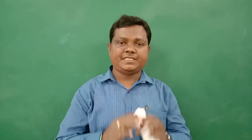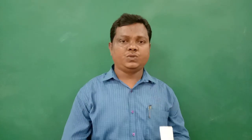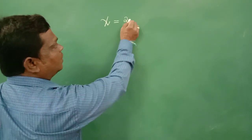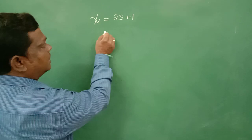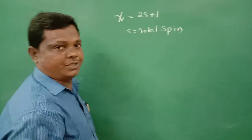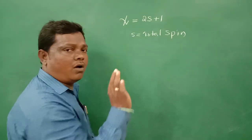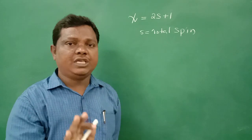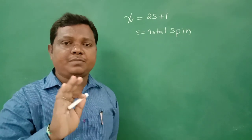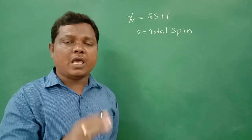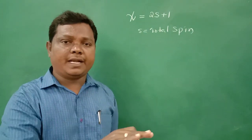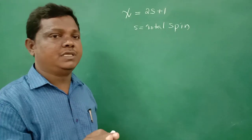In order to understand the Jablonski Diagram, we need to know some terminology. Spin multiplicity chi is equal to 2S plus 1, where S is the total spin of the molecular system. For example, in all molecules having an even number of electrons at ground state, the electron spins are paired up — except oxygen molecules.